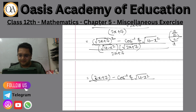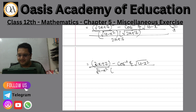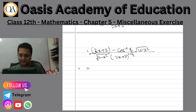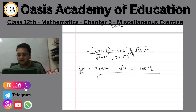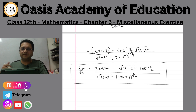Divided by under root 4 minus x square, then 2x plus 7 to the power 1 plus 1 by 2, which is ultimately 3 by 2. So the final answer dy by dx in the numerator: 2x plus 7 minus under root — constant term first, then the trigonometric term — whole divided by under root 4 minus x square into 2x plus 7 to the power 3 by 2. I hope the question is clear. It's a little lengthy question, but step by step you can do it very easily.